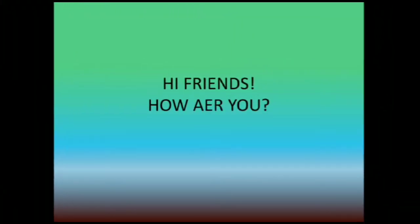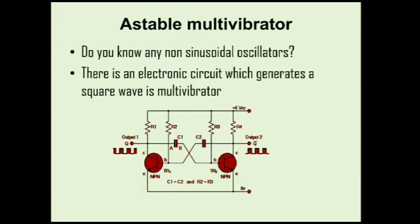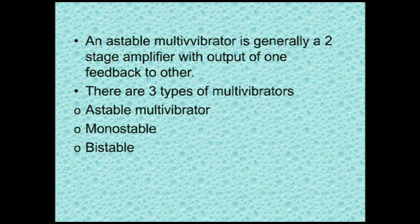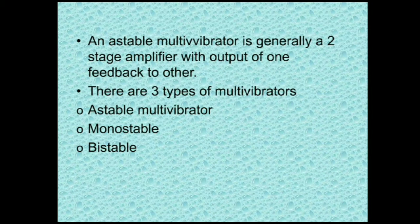Hi friends, how are you? Do you know any sinusoidal oscillators? There is an electronic circuit which generates a square wave — the multivibrator. It is called a multivibrator because the output vibrates between two states. An astable multivibrator is generally a two-stage amplifier with the output of one fed back to the other — that is, two transistor amplifiers are cross-coupled.